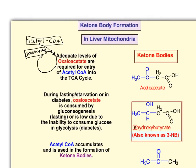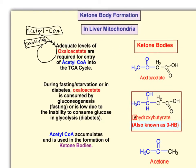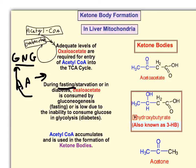During the fasting state, you have amino acid skeletons being broken down to form pyruvate and therefore oxaloacetate. But you don't want to use those oxaloacetates to run the TCA cycle — you want to use those for gluconeogenesis. And by using those for gluconeogenesis, you'll have a buildup of acetyl-CoA.